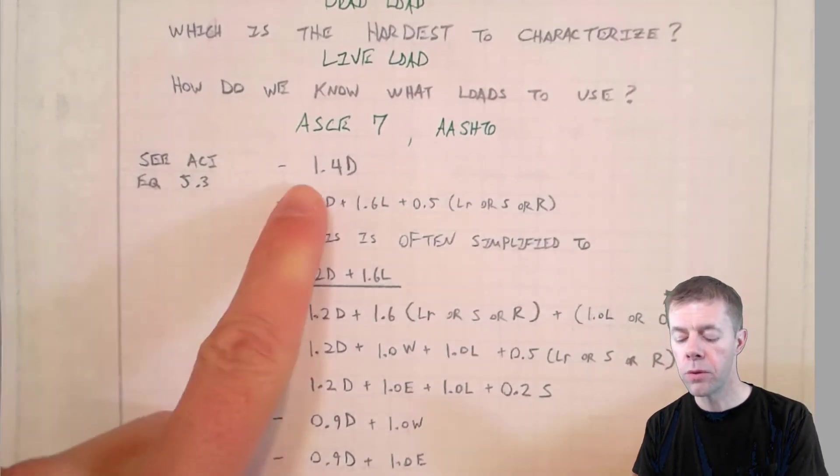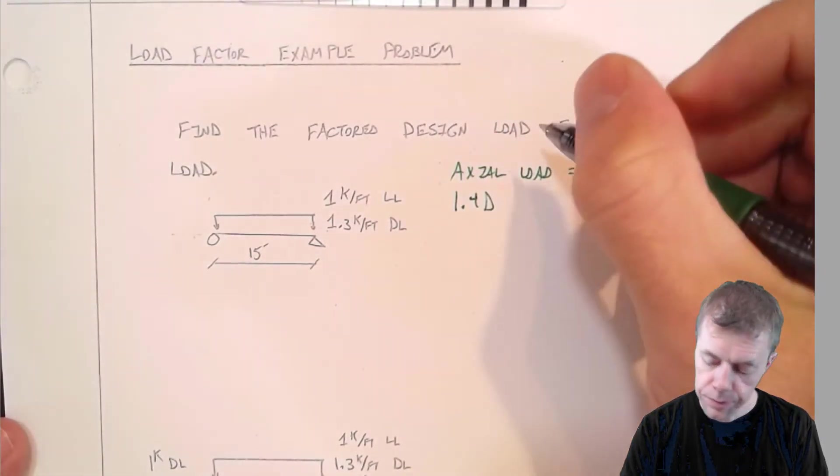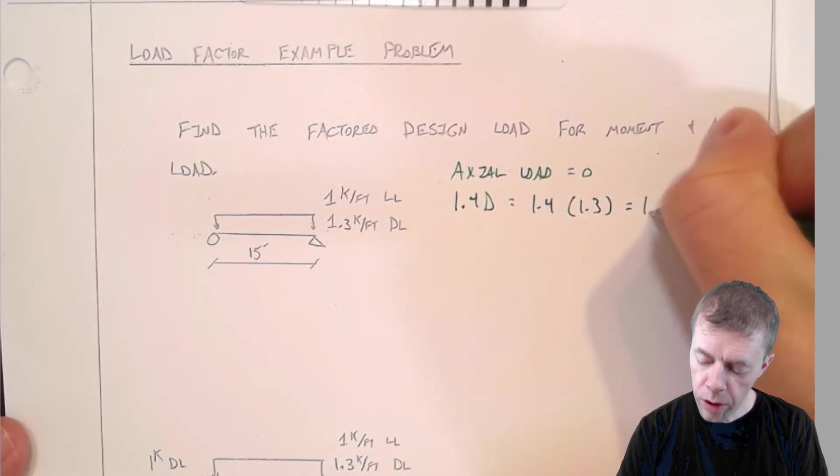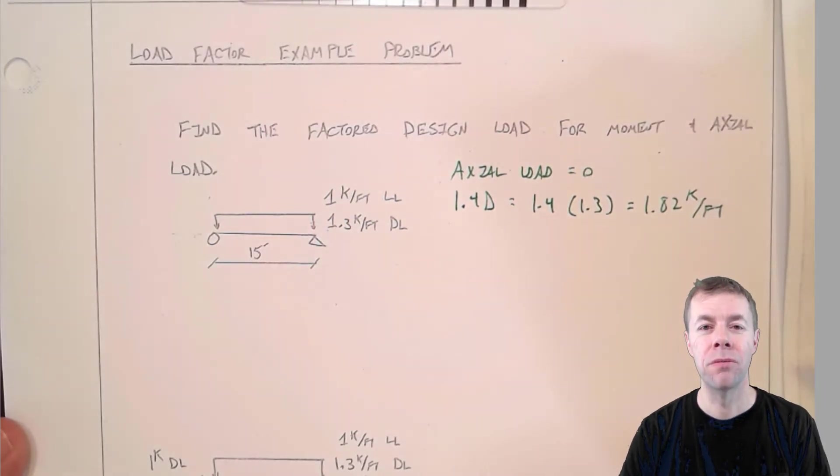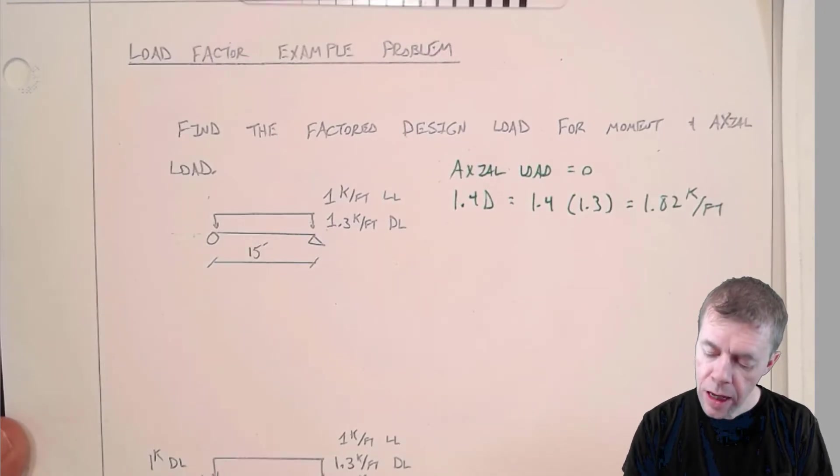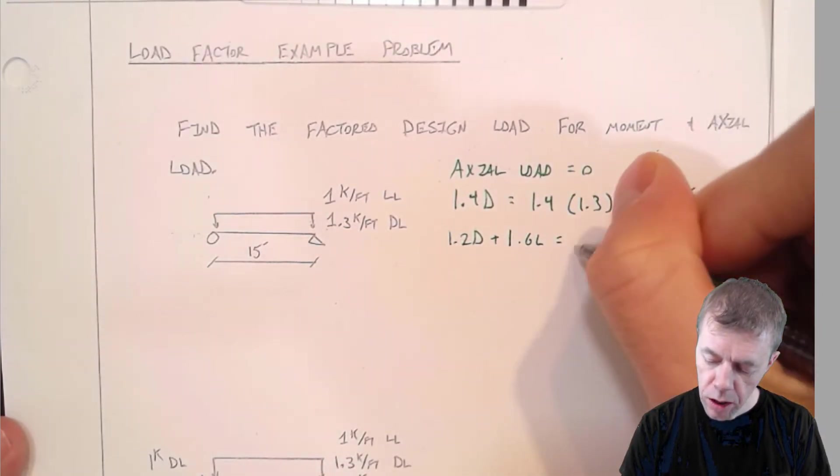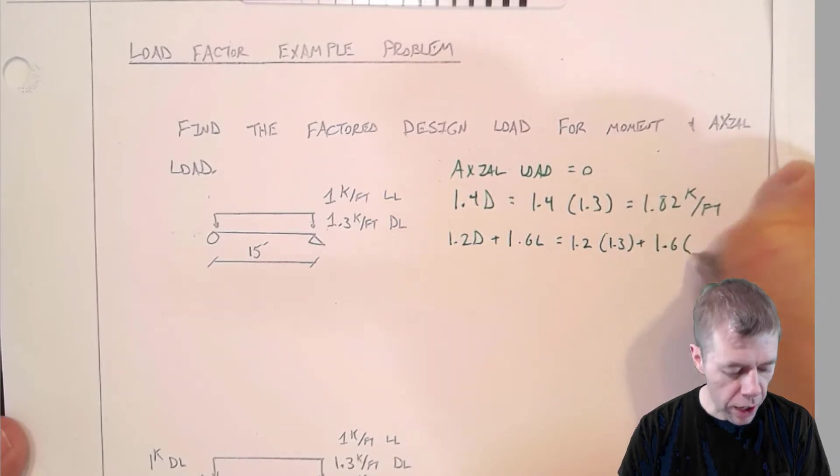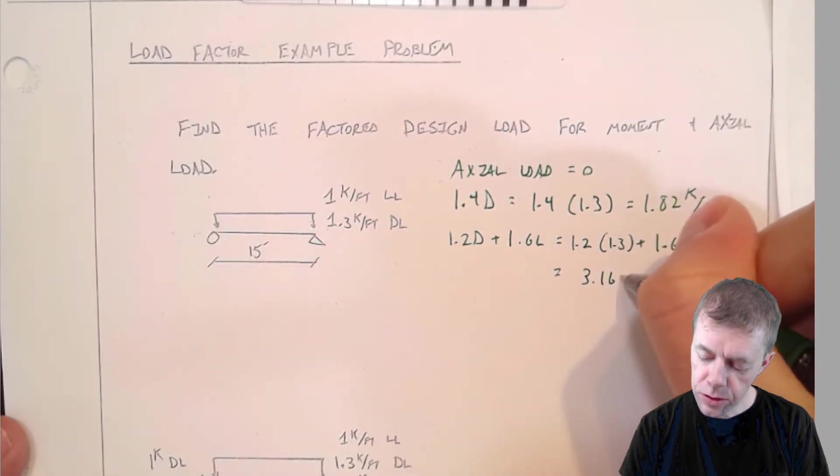Let's start out with the top one, then we'll use the next one. 1.4 times the dead load, that's equal to 1.4 times 1.3, and that's equal to 1.82 kips per foot. What's a kip? 1,000 pounds. Now let's try the other one. 1.2 dead plus 1.6 live. 1.2 times 1.3 plus 1.6 times 1. That's equal to 3.16 kips per foot.